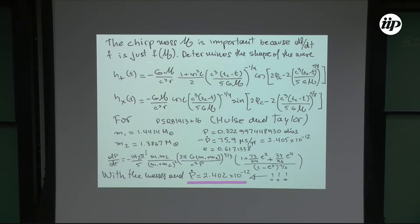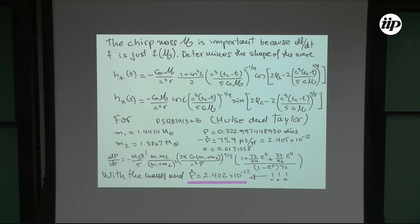We apply these results to the famous binary pulsar 1913+16, studied by Hulse and Taylor for which they received the Nobel Prize. Using the measured masses, orbital period in days, and rate of change of period, we get a predicted period change of 2.4 × 10^{-12}. This prediction matches the measured value to extreme precision.